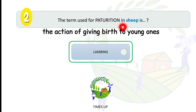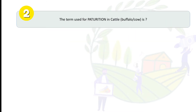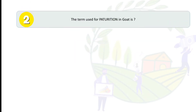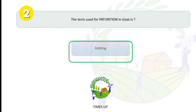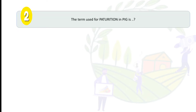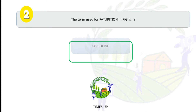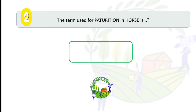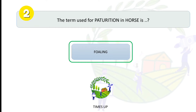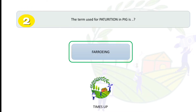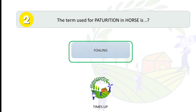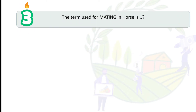The term used for parturition in sheep is lambing. Parturition is the action of giving birth to young ones. The term for parturition in cattle (buffalo or cow) is calving, in goat it is kidding, in pig it is farrowing, and in horse it is foaling. Don't confuse horse and pig — horse is foaling, pig is farrowing.